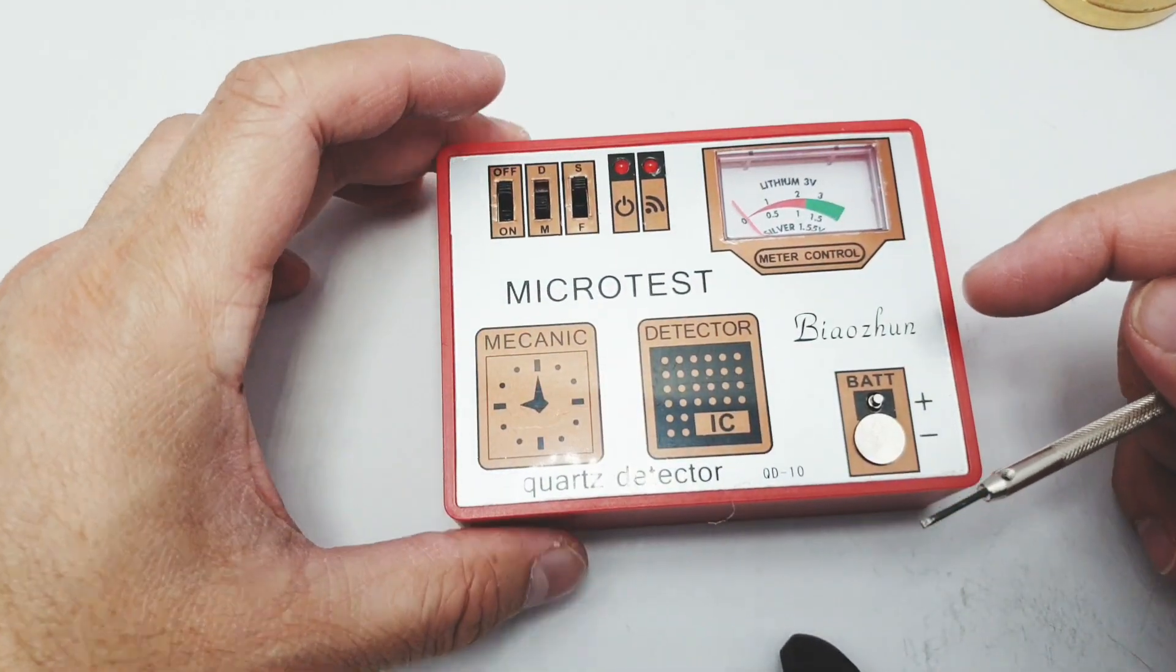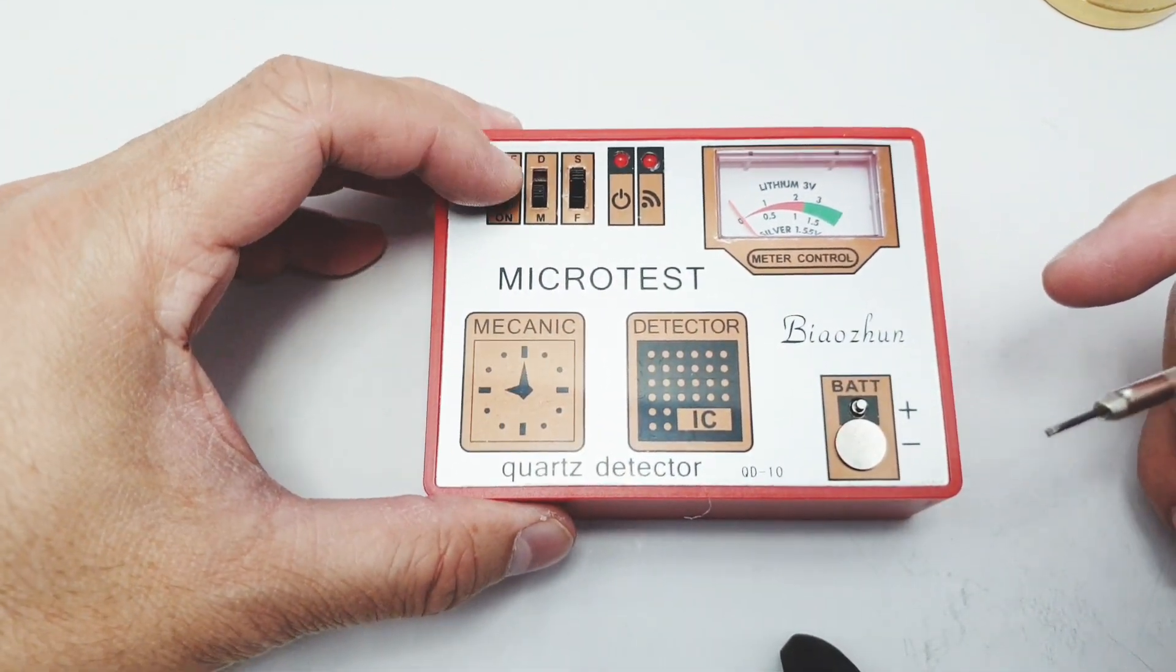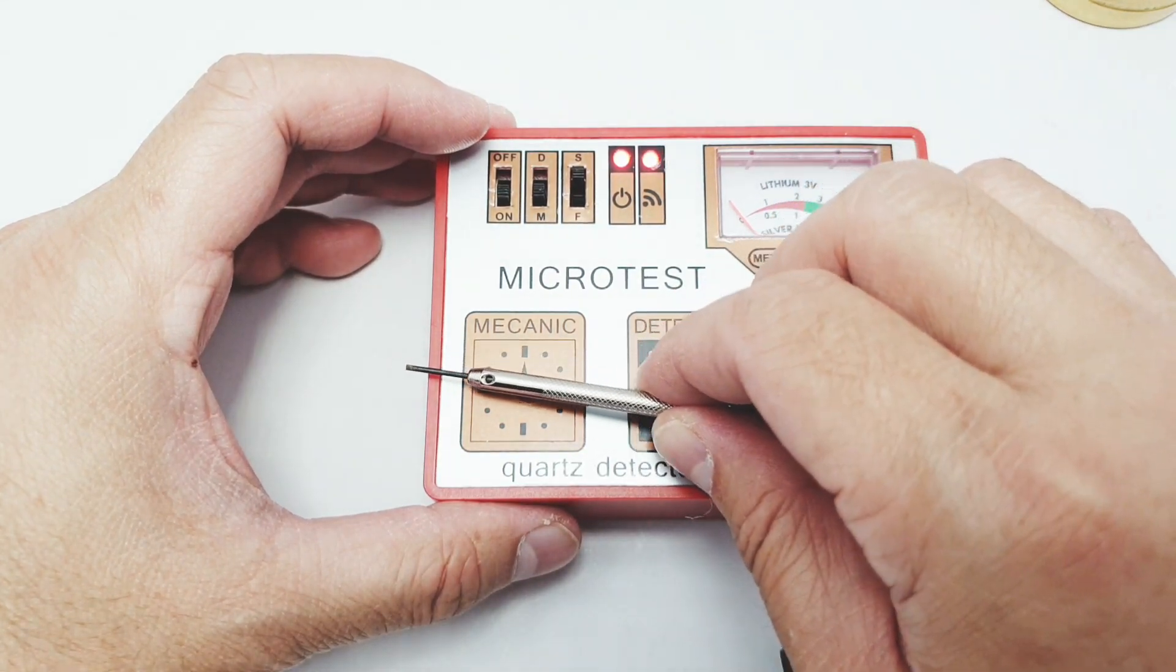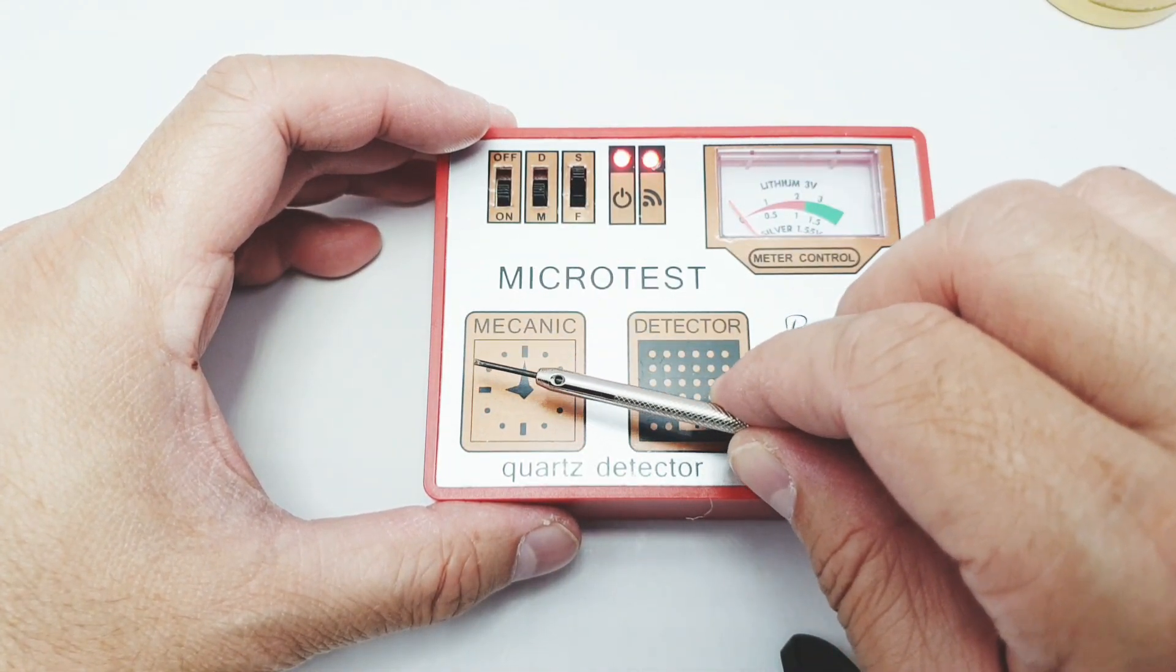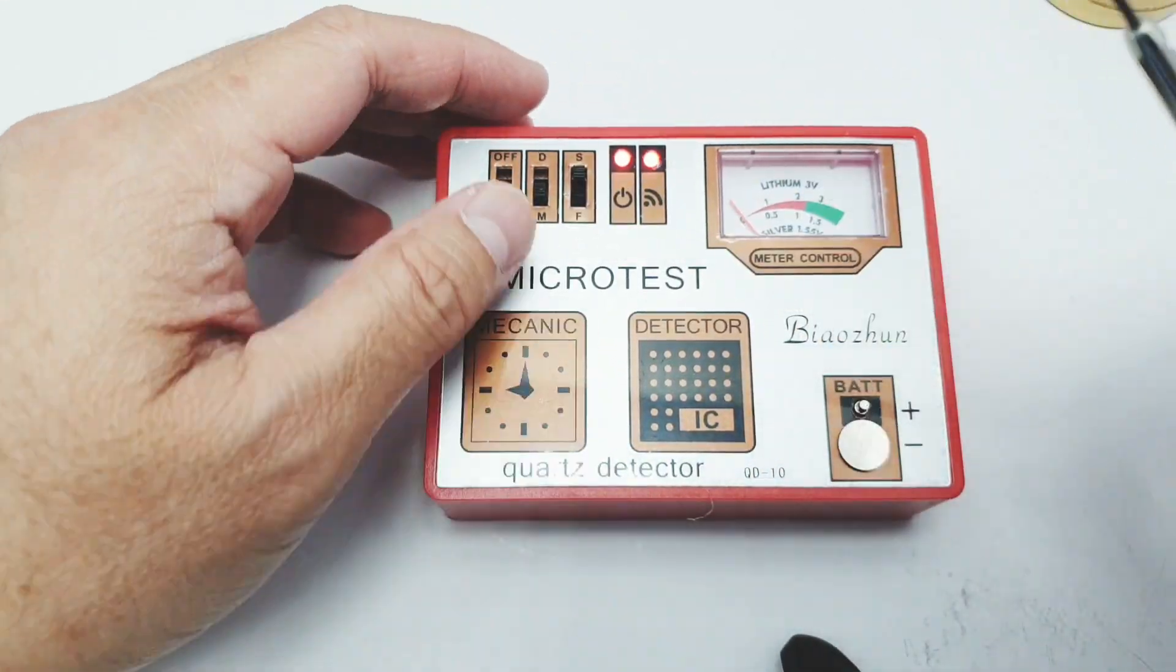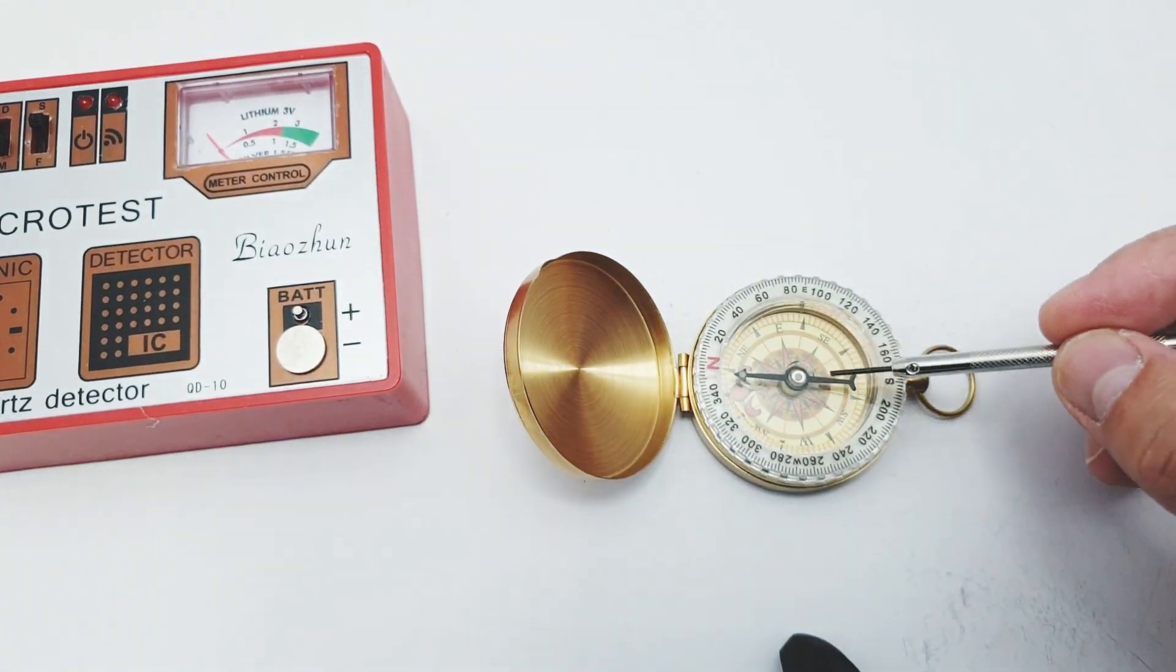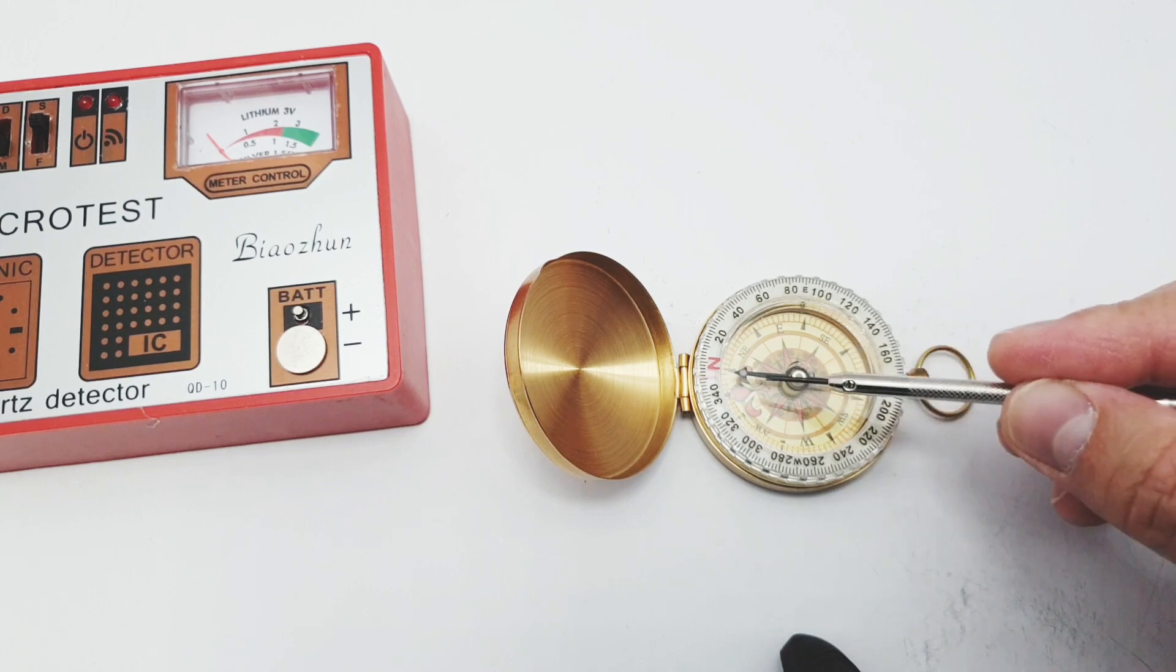Now let's try and demagnetize the screwdriver again. Switch the tester on and the middle switch should be at M. Place it on top of the mechanic and bring it slowly up while doing that for three times or more depending on the need, and try it again. This should remove the magnetism from the screwdriver as you can see.